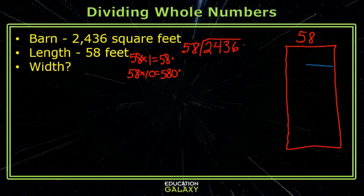So I'll begin by taking out an area of 580. That is 58 times 10, and the 10 is called a partial quotient. It's not our final quotient answer, but it's a part of it.